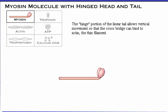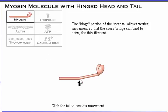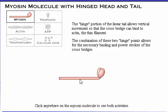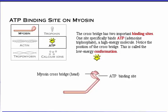Another feature of the myosin molecule is the hinge portion of the linear tail. This allows vertical movement so that the crossbridge can bind to actin, the thin filament. The crossbridge has two important binding sites. One site specifically binds ATP, adenosine triphosphate, a high energy molecule.